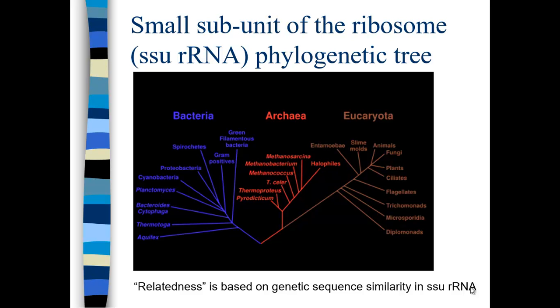Here's another phylogenetic tree that gives you bacteria, archaea, and eukaryota. The relatedness is based on sequencing. If something is close on the phylogenetic tree, it doesn't necessarily mean that it looks similar, but it is indeed genetically similar.